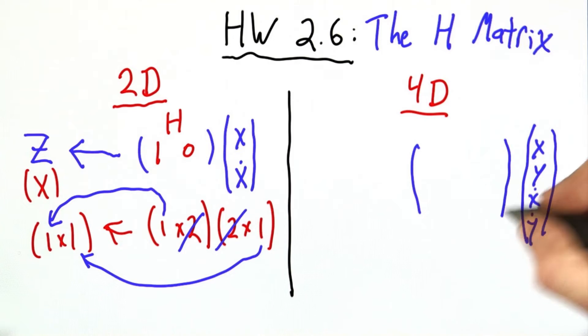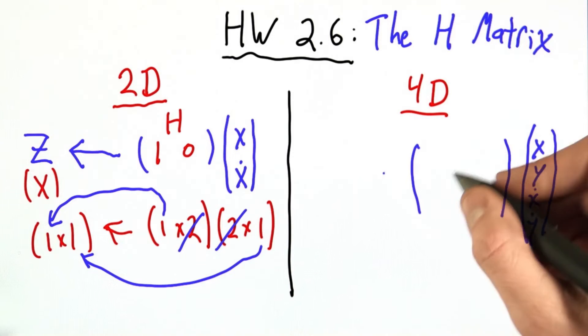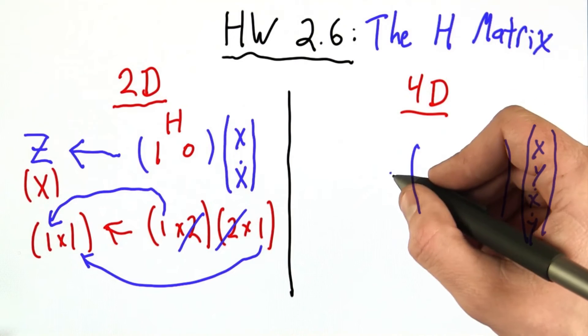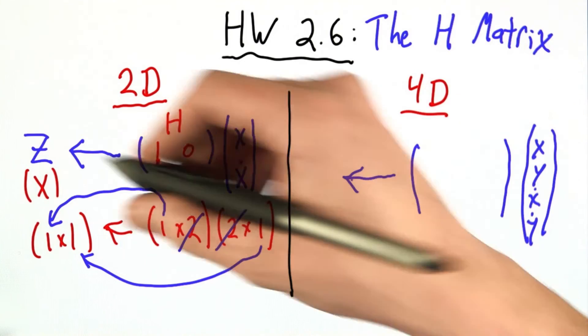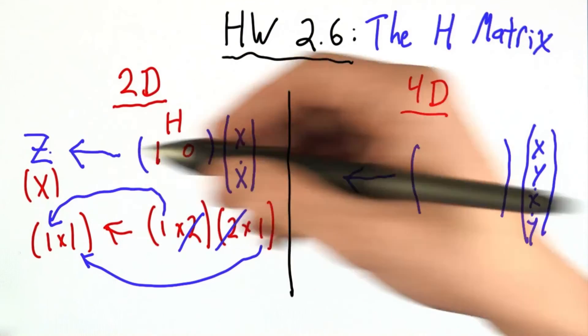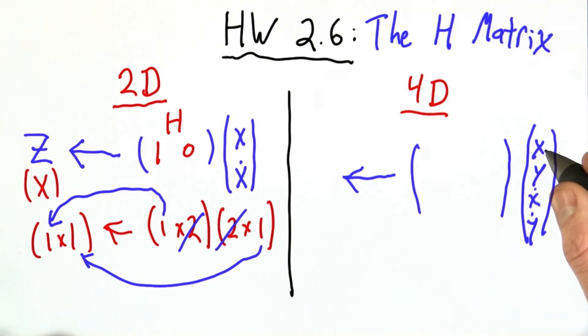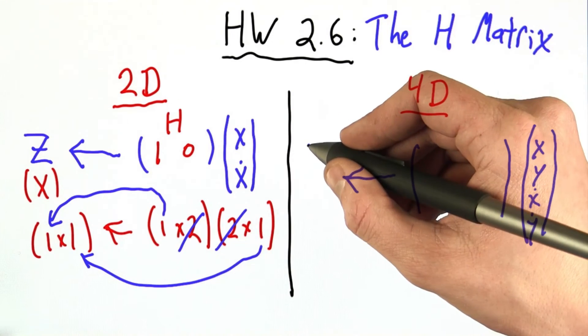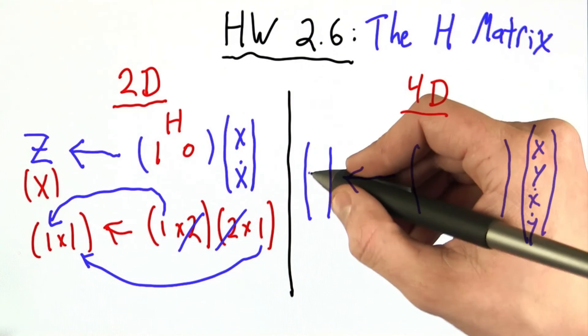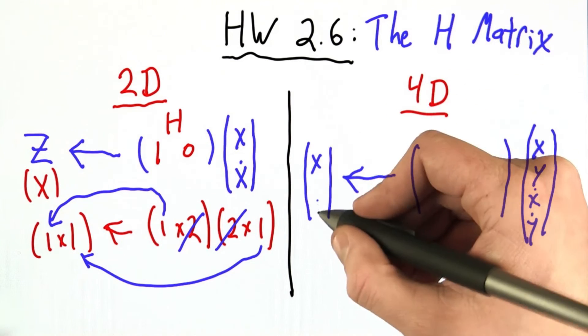We're going to have some H matrix. I don't know anything about it yet, but I'm just going to put this there for now as a placeholder. And we want to get a measurement from that. And what should this measurement be? It's not just going to be x, because now our position includes both x and y. So it's going to be a column vector, x and y.